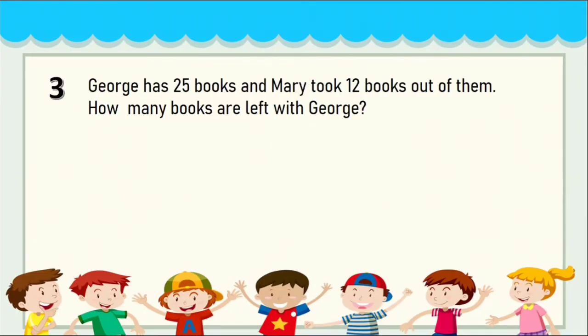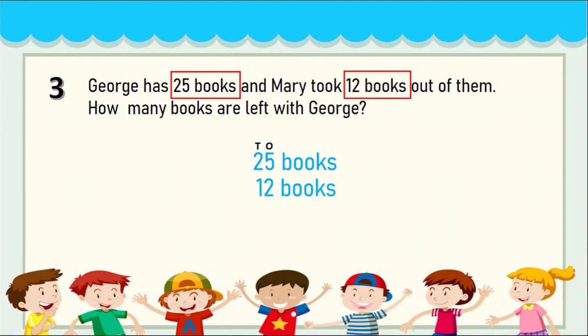Next question: George has 25 books and Mary took 12 books out of them — how many books are left with George? The word 'left' is there, so it's a subtraction problem. Read the question: George has 25 books — highlight the number 25 and write '25 books.' Then: Mary took 12 books — highlight and write '12 books.'